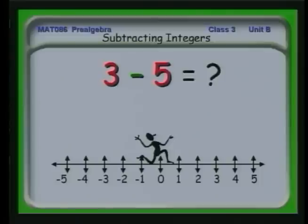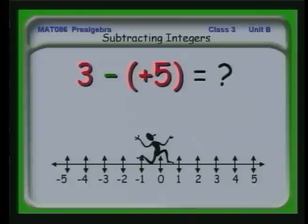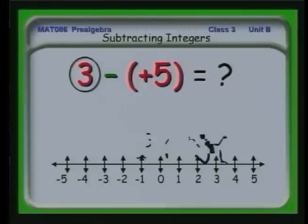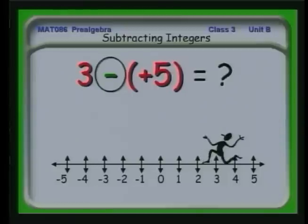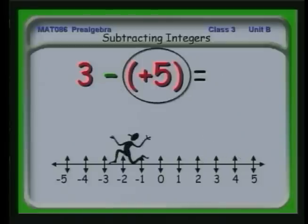Here's another one: 3 minus a 5. Let's use the same rules for this simpler situation. We recast it as 3 minus a plus 5. Following the rules: first we see 3, which tells us to go ahead 3. Then the minus sign says turn around. Then a plus 5 says go ahead 5. We wind up at minus 2. The model works here too — 3 minus a plus 5 gives minus 2 by the rules we've already developed.